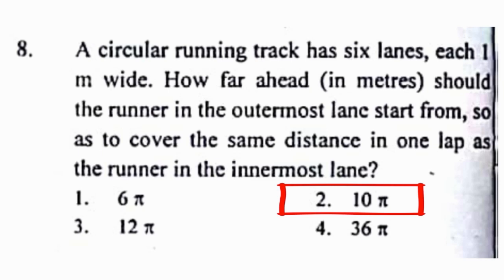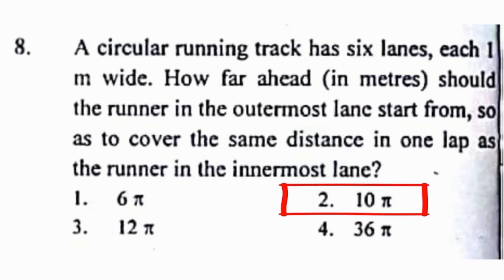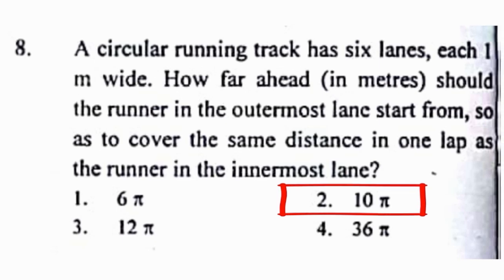Problem number 8: A circular running track has 6 lanes, each 1 meter wide. How far ahead in meters should the runner in the outermost lane start from, so as to cover the same distance in one lap as the runner in the innermost lane? The correct answer to this problem is option 2, that is 10 pi.